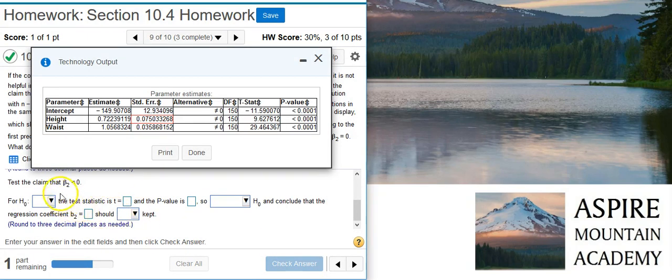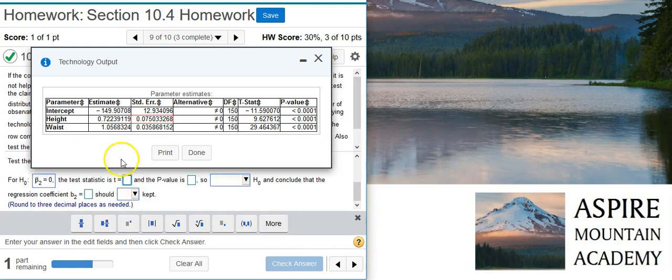Now the next part wants me to test the claim that beta 2 equals 0. Well, we're just going to go through the same process that we did before with the first hypothesis test. So we're going to select a statement of equality for our null hypothesis. The test statistic is located here on the last row because the last row corresponds with the second predictor variable, and that's what we're looking for. Beta 2 corresponds with the second predictor variable.